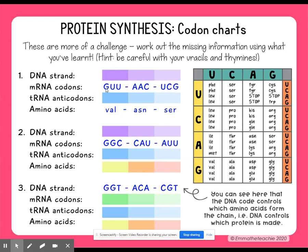We're going to go back and see G pairs with C. And if there's a U here, that means it was pairing with an A. So this should be CAA. Then if we look at the A's, we have AAC — A in RNA pairs with T in DNA, so it should be TTG. And then we have UCG, meaning in DNA: U pairs with A, C with G, and G with C, so you should have AGC.